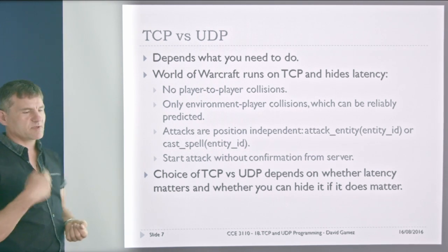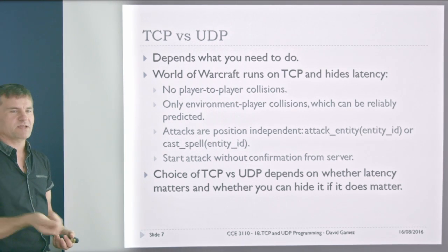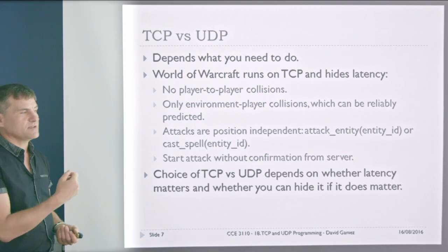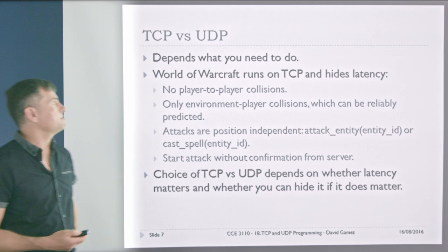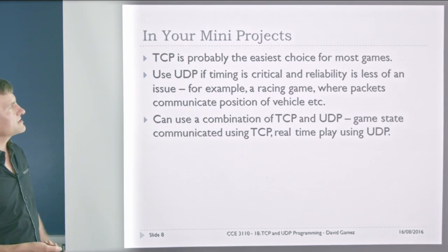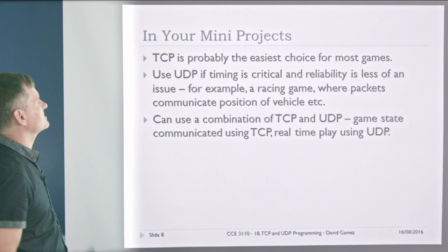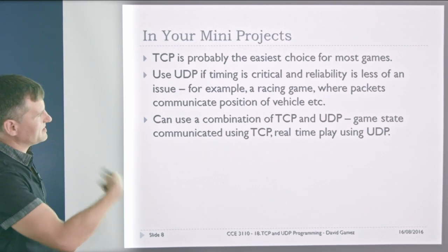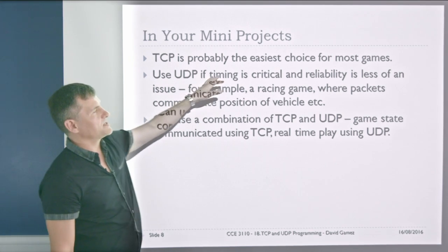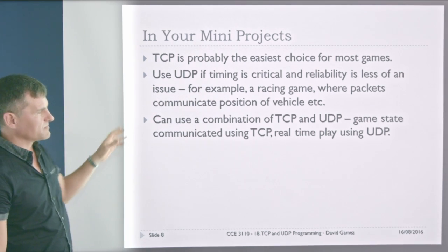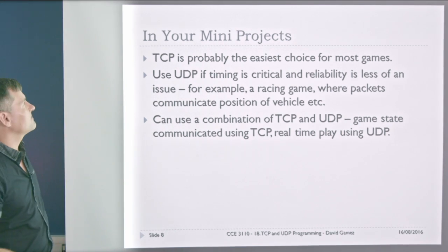In a later lecture I'm going to give you examples of game architectures — how you can build online games using TCP and using UDP. The turn-taking stuff will use TCP, but I'll also show you how to build a real-time interactions game using UDP. TCP is the easiest choice because persistent connections work with streams, and it's easy to send serializable objects to the TCP socket and read from the connection. But for a racing game where timing is more critical, you might want UDP. You can also combine TCP and UDP: use TCP to set up the game, then UDP for the real-time interactions.